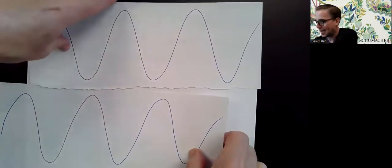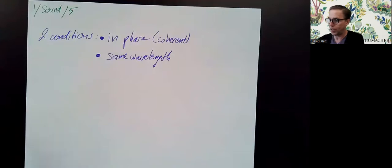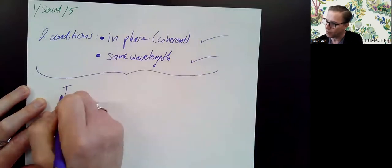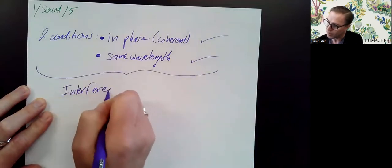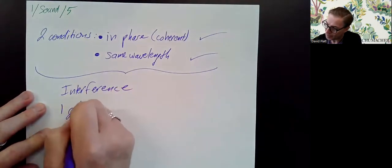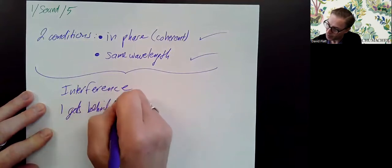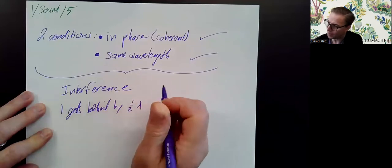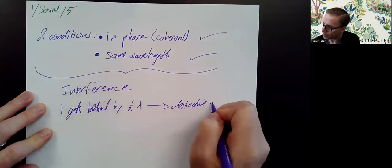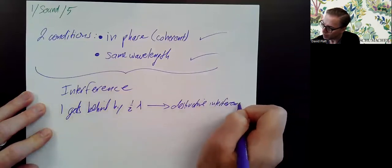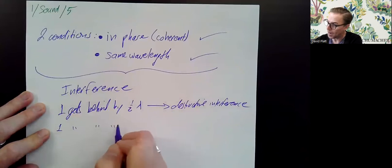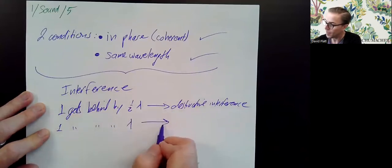So that's the big idea. We have these two conditions, and if they're met, we can talk about interference. If one wave gets behind by half a wavelength, we get destructive interference. But if one gets behind by a whole wavelength, we have constructive interference.